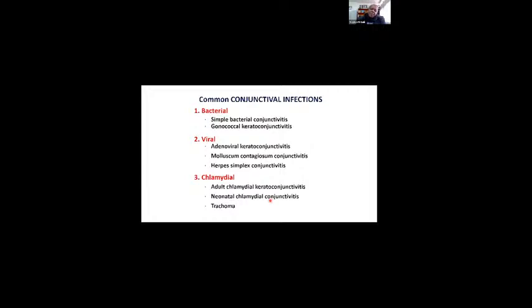The common infections: bacterial conjunctivitis. There are different entities but the most common typical is simple bacterial conjunctivitis. Then there's a rare one which is gonococcal that will be covered in pediatric ophthalmology lectures. Gonococcal conjunctivitis can also occur in adults, it's a dramatic condition, purulent conjunctivitis, it's an STI. Viral conjunctivitis is probably also very common, adenovirus being the most common, molluscum, and herpes simplex. And then there's chlamydia which I will not cover today.